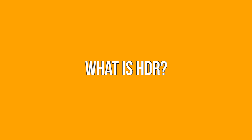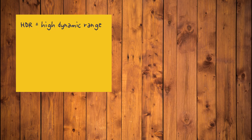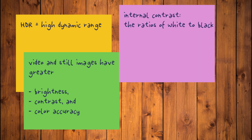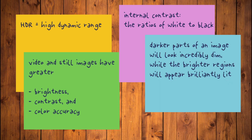HDR, or high dynamic range, is quite possibly the most significant development in video quality since the jump from SD to HD. The technology allows both video and still images to have far greater brightness, contrast, and color accuracy. When you look at HDR content, what draws the eye is the internal contrast — the ratios of white to black on screen. Darker parts of an image will look incredibly dim while brighter regions appear brilliantly lit. HDR is largely a function of brightness, contrast, and color depth, though the technology gets more complicated with dimming zones and OLED panels.